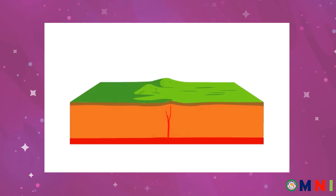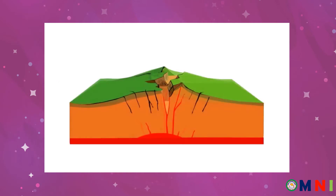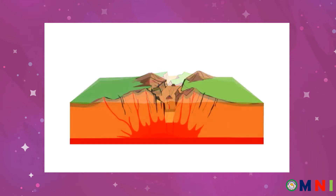In divergent plate boundaries, the two plates move away from each other. This movement allows the magma underneath to rise up until it reaches the surface, causing seafloor spreading.